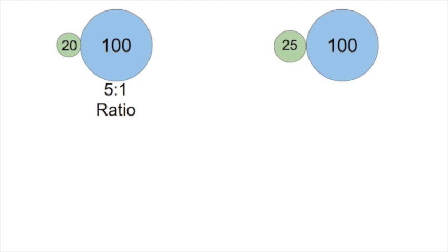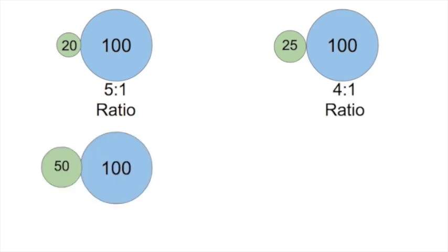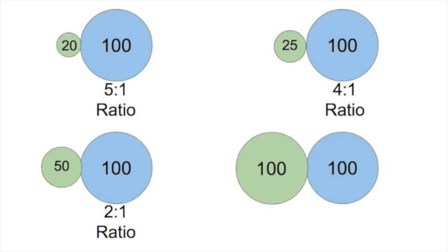If we had a 25-tooth gear turning the 100-tooth, it would only have to go around four times — a 4-to-1 ratio. A 50-tooth turning a 100-tooth goes around twice, a 2-to-1 ratio. And if we had a 100-tooth gear turning another 100-tooth gear, that would be a 1-to-1 ratio.